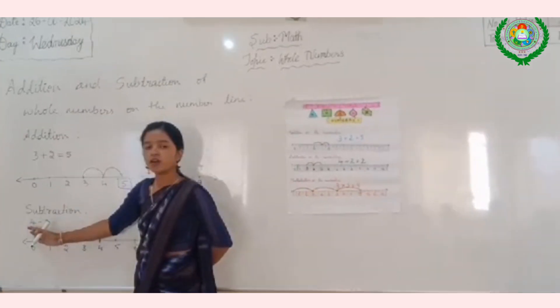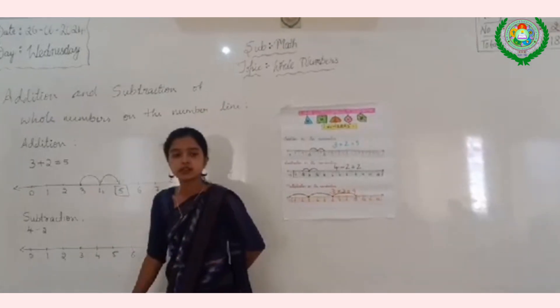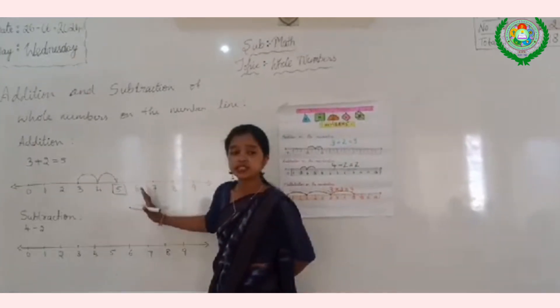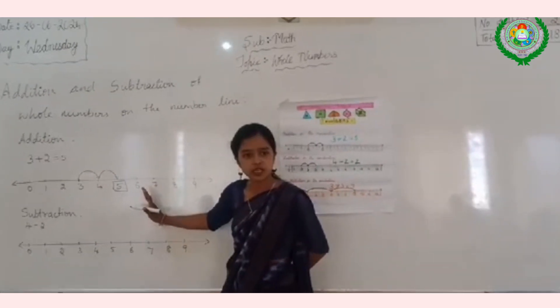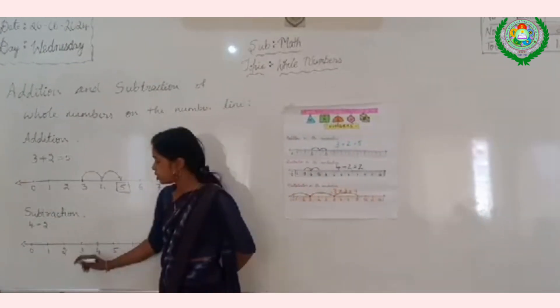Let us take an example of 4 minus 2. We have to start from the number 4. How we have moved right side towards the number line for the addition? We have to move towards the left side on the number line for the subtraction.